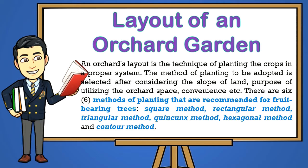Layout of an orchard garden — an orchard's layout is the technique of planting the crops in a proper system. The method of planting to be adopted is selected after considering the slope of land, purpose of utilizing the orchard space, convenience, etc. There are six methods of planting that are recommended for fruit-bearing trees: square method, rectangular method, triangular method, quincunx method, hexagonal method, and contour method.